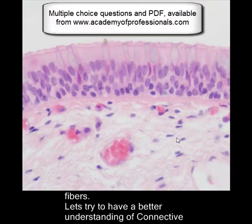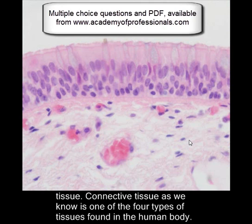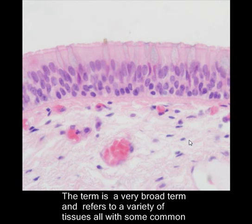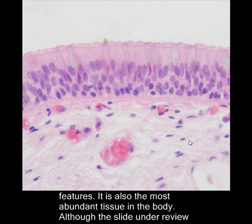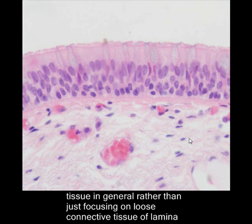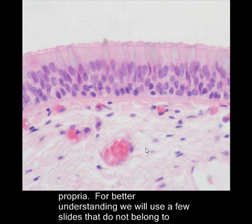Let's try to have a better understanding of connective tissue. Connective tissue is one of the four types of tissues found in the human body. The term is a very broad term and refers to a variety of tissues, all with some common features. It is also the most abundant tissue in the body. Although the slide under review belongs to trachea and we are dealing with the lower respiratory tract, we will discuss connective tissue in general rather than just focusing on the loose connective tissue of lamina propria. For better understanding, we will use a few slides that do not belong to the respiratory system.